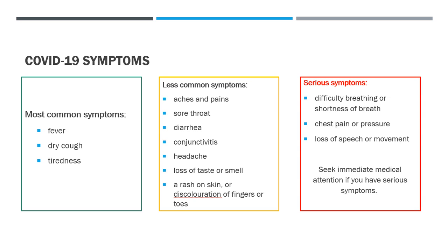A rash on the skin or discoloration of fingers or toes. The serious symptoms are difficulty breathing or shortness of breath — this is a respiratory illness. Chest pain or pressure in the chest, and loss of speech or movement — you should seek immediate medical attention if you have these serious symptoms.